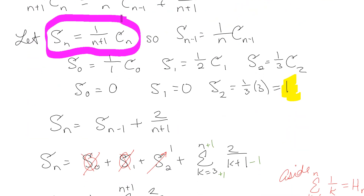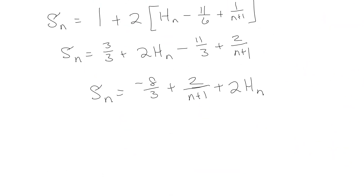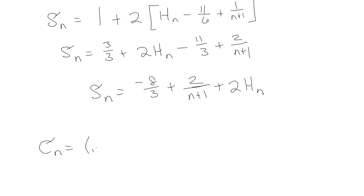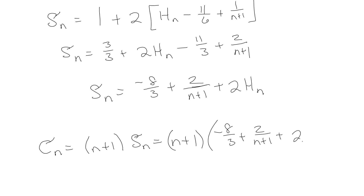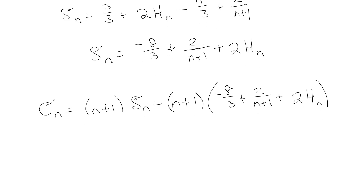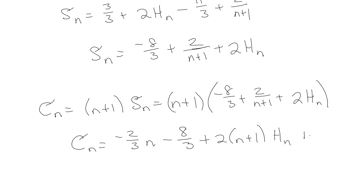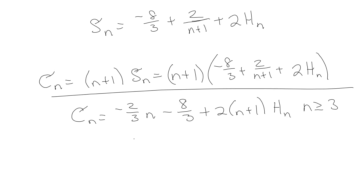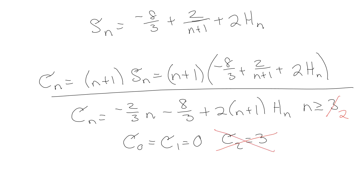Now I need to convert back to C(n). Since s(n) = C(n)/(n + 1), we have C(n) = (n + 1)·s(n). Plugging in and simplifying, some terms cancel in lovely ways: C(n) = 2(n + 1)·H(n) − (8/3)(n + 1) + 2, valid for n ≥ 2. I should verify c₀, c₁, and c₂ separately, but actually this works for n = 2 too.